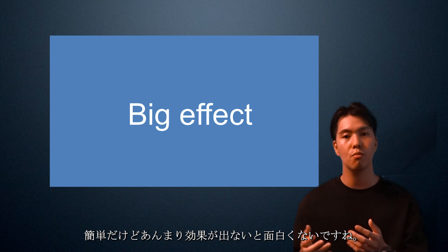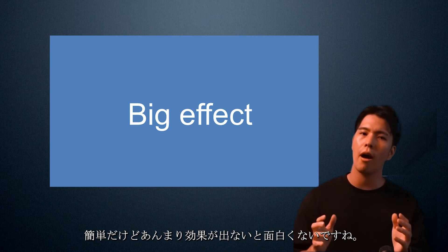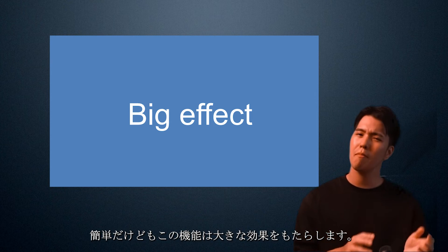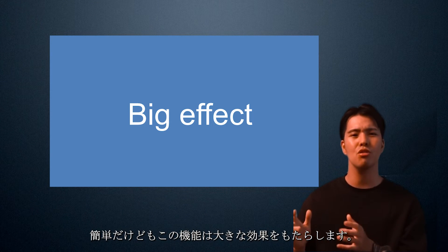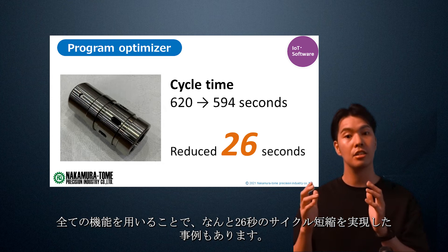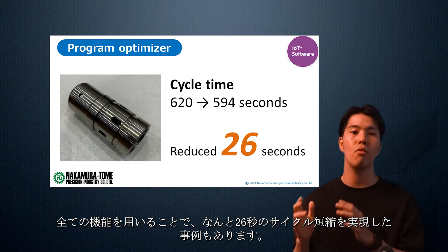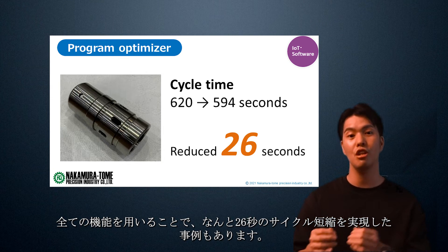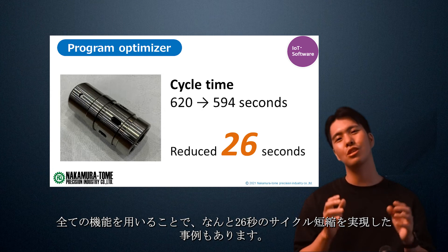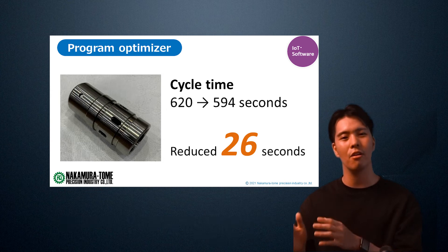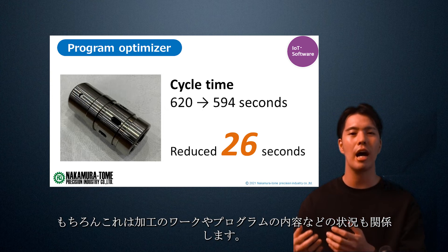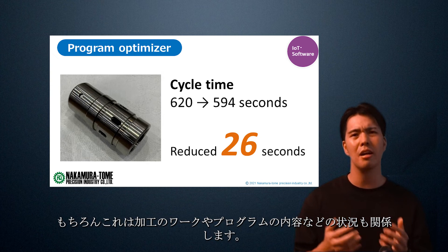It's easy to use, but is it effective? This feature has a great effect. In one case, a cycle time reduction of 26 seconds was achieved by using all the functions. Of course, this depends on the workpiece to be machined, the content of the program, and other circumstances.